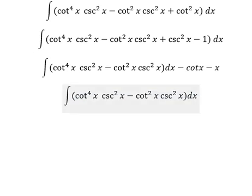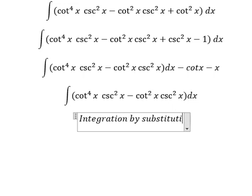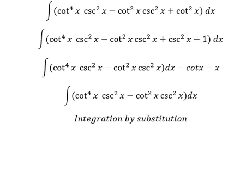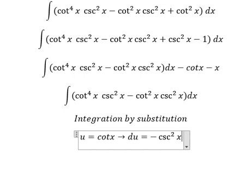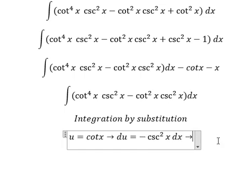Next, we need to use integration by substitution. So I will put u equal to cotangent x. Later, we need to do the first derivative for both sides, and we have du equals negative cosecant squared x dx. Because we don't have the negative sign next to here.